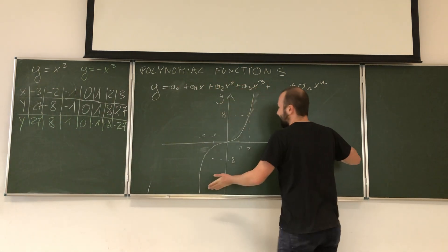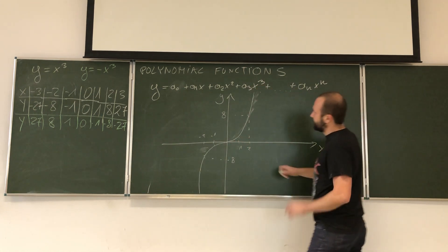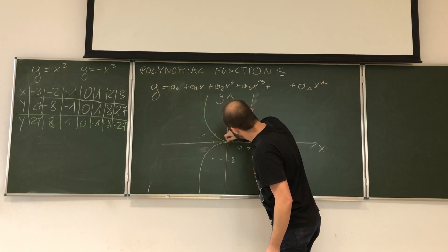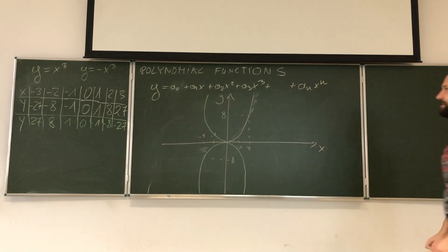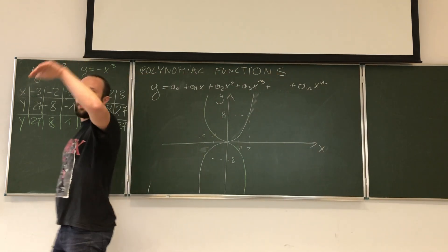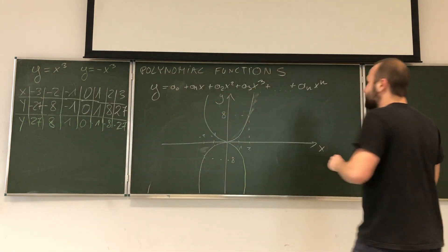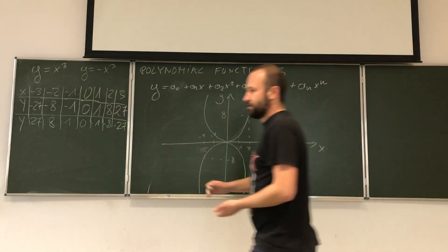Look, again we will just have mirror reflection with respect to x-axis. So this function will look like that. And look, this, except for these humps or hills and valleys, gives us the entire notion what will be happening with polynomial function.